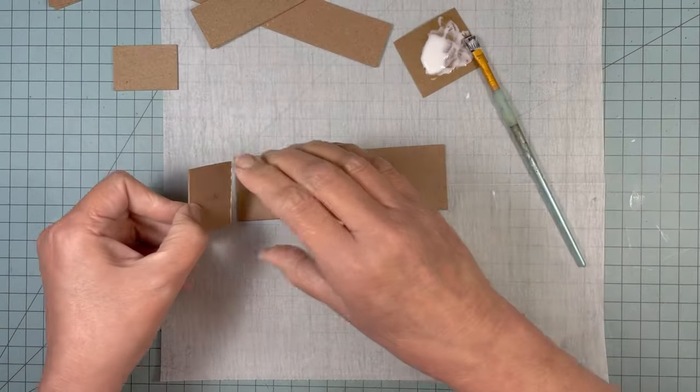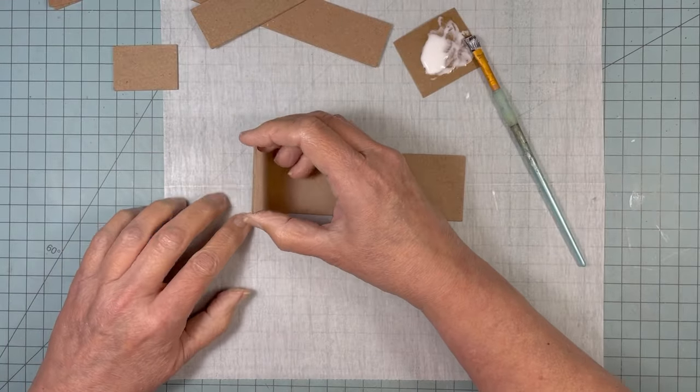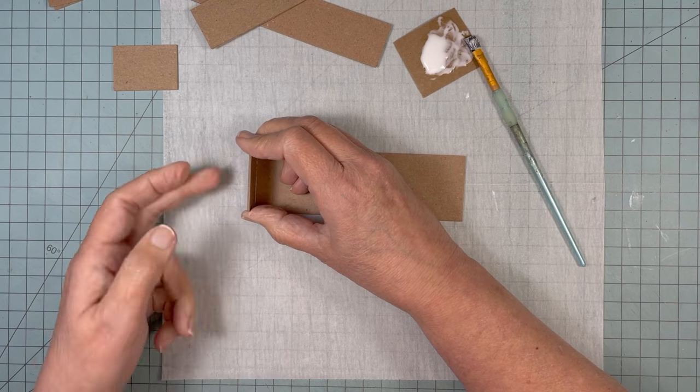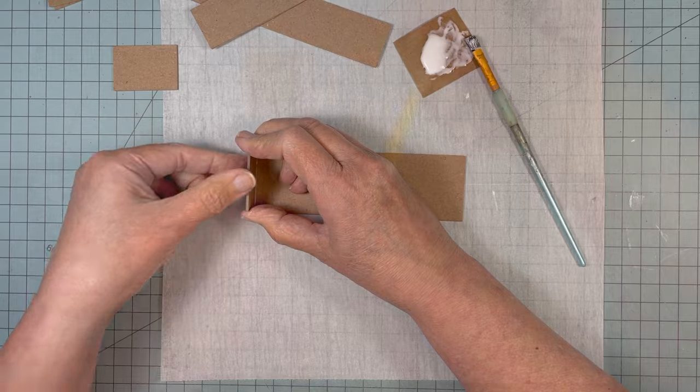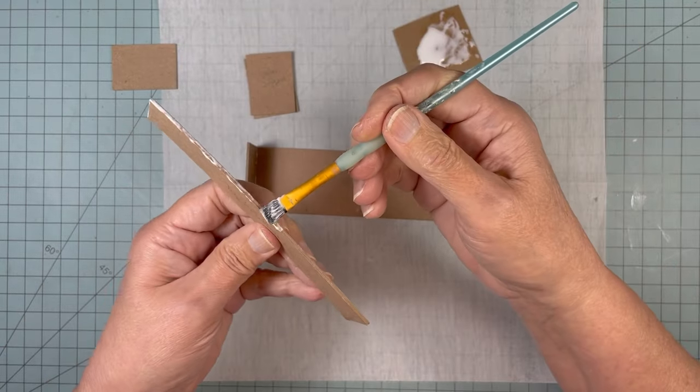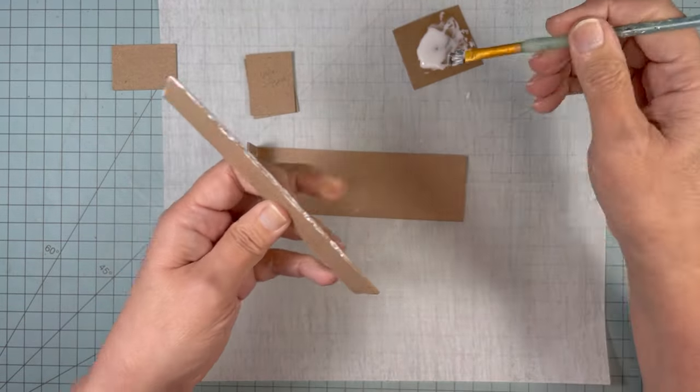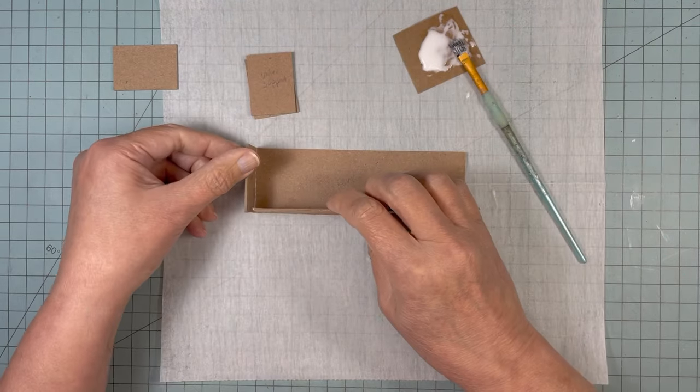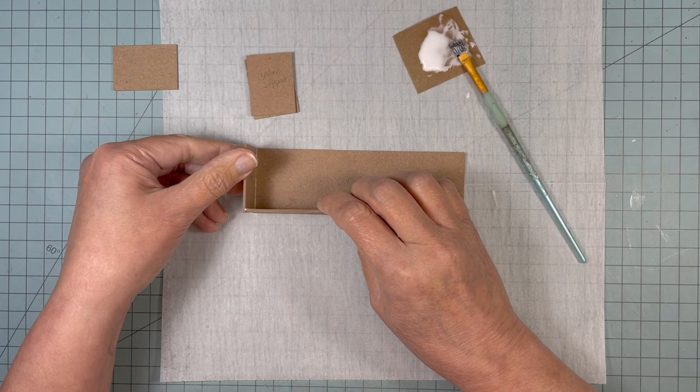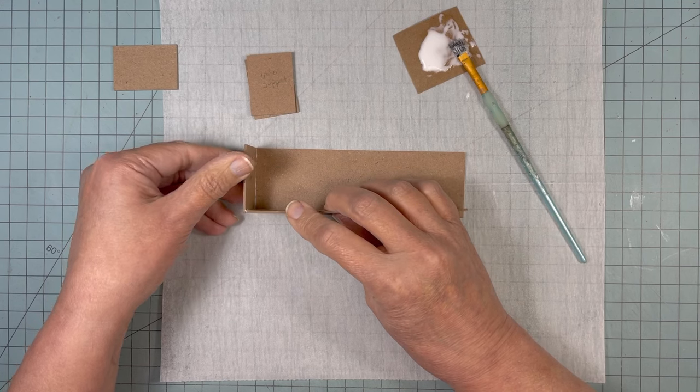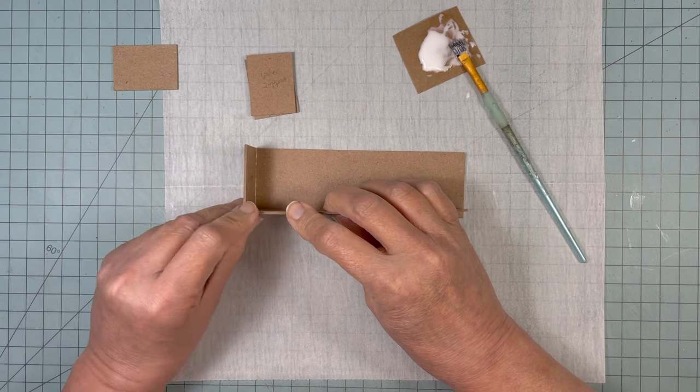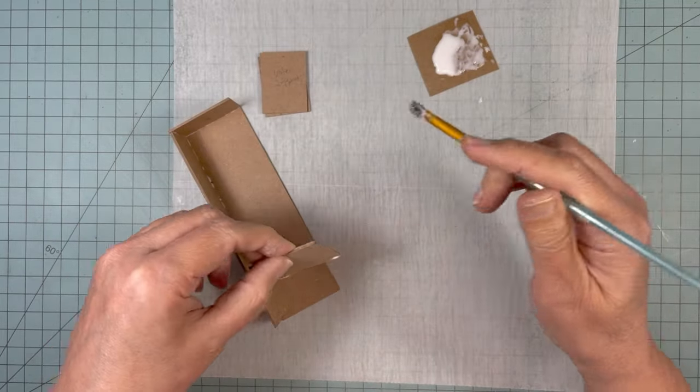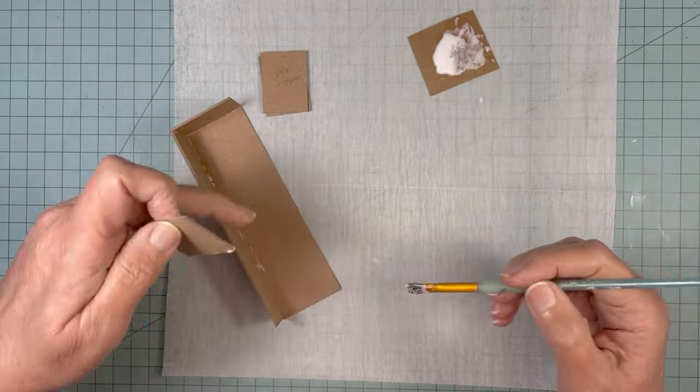I'm gluing one of the sides onto the back. And now I'm gluing the bottom to the back and the side. Here I'm gluing the other side onto the back.